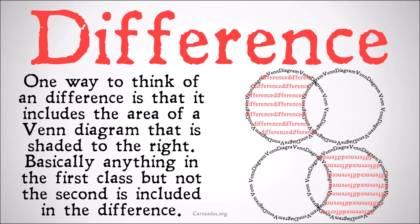One way to think of difference is that it includes the area of a Venn diagram that is shaded to the right. Basically anything in the first class but not in the second class is included in difference.